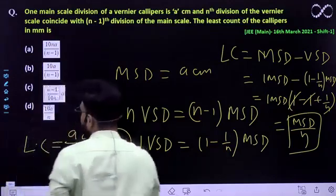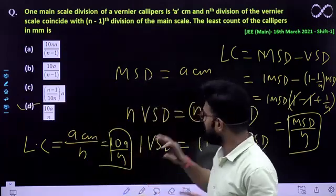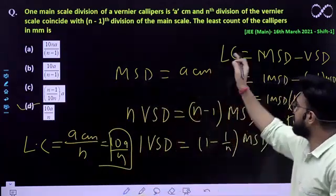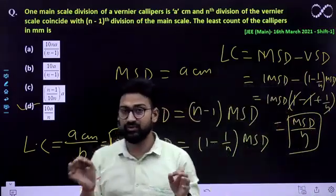So the answer would be your option D. I hope this thing is clear to everyone. You only need to know that least count equals MSD minus VSD. Rest everything is given to you.